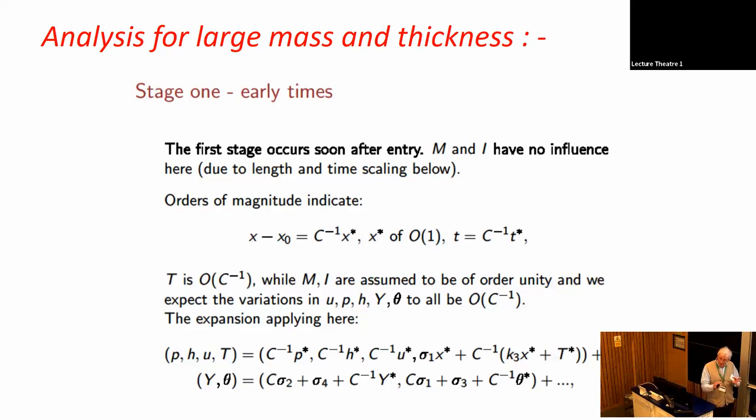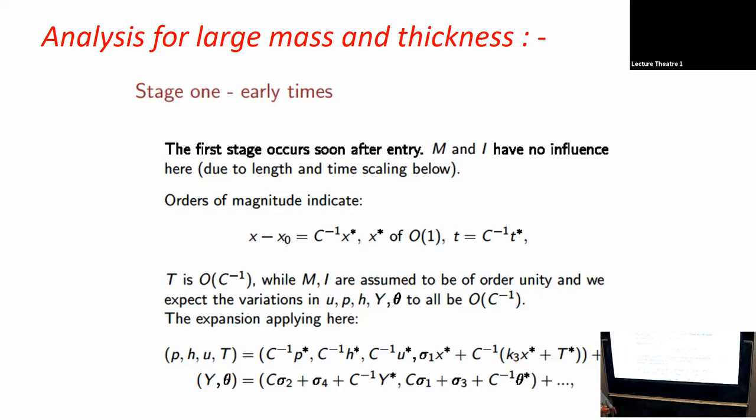We tackled this the other way around. We first took the curvature C to be large, and then virtually increased the mass factor to see where they interact with each other. With the factor M being order one and C the thickness being large, you first get a first stage where the length scale is order C to minus one and the time scale is C to minus one. The movement is order one, comparable with the flow speed coming on. We expand the solution in this form.